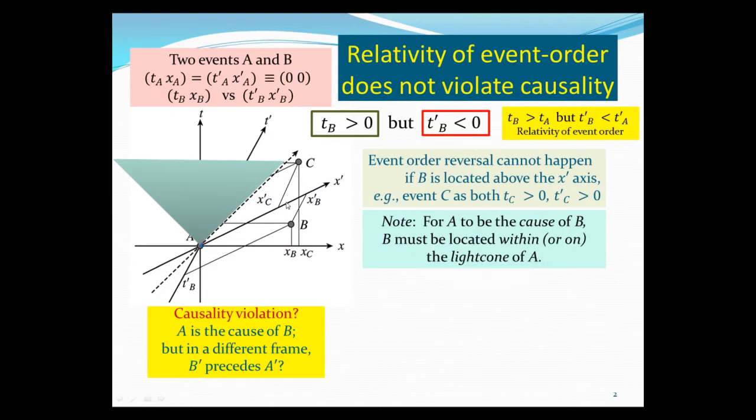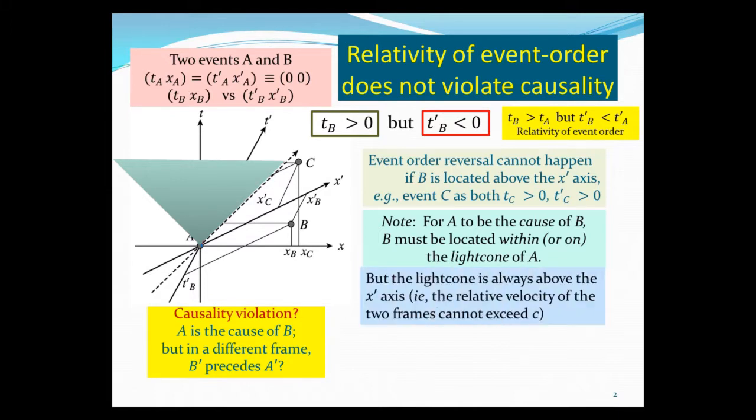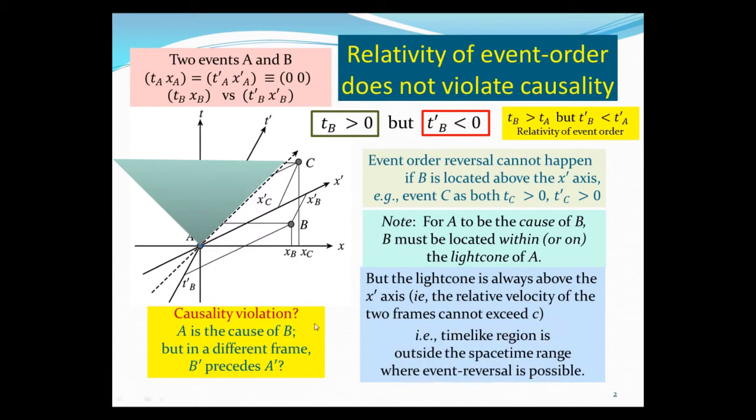In order for A and B to be causally connected, if A is at the origin, B must be located in the timelike region within the light cone. That's the only way they can be causally connected by signals that travel less than speed c. This timelike region is always above x prime—it can never be below x prime, because that would involve superluminal speed greater than c. The timelike region is always outside the spacetime region where event order reversal is possible, so therefore causality is safe in relativity.